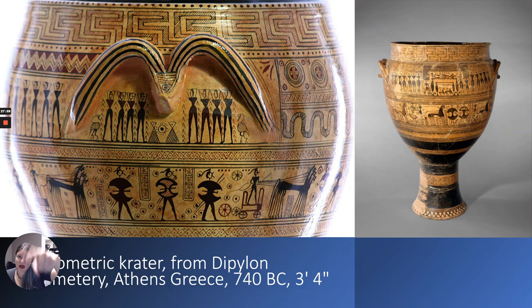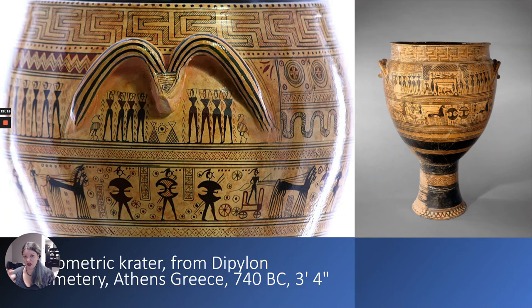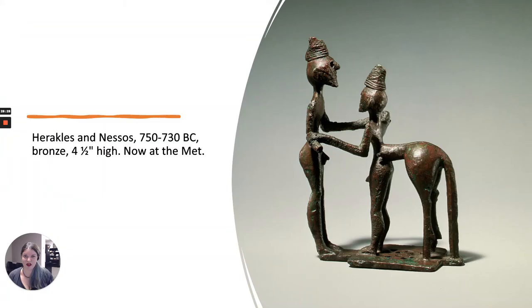At the top of the Dipylon crater we have what's called a meander, also known as a key pattern — this is where we get the name for the geometric period. We also have other kinds of geometric-inspired patterning, but importantly we also have human figures and horses and chariots. So we're starting to see some depiction coming back into the realm of representation.